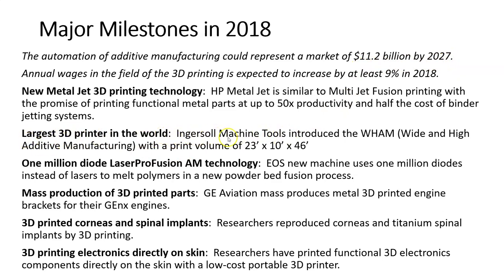The largest 3D printer in the world was developed by Ingersoll Machine Tools — a 1 million diode laser pro-fusion AM technology using 1 million diodes instead of a laser. Metal 3D printing is really starting to catch on. All earlier milestones were plastic technologies; metal came on with the advent of powder bed fusion — using the same technology as selective laser sintering but replacing plastic powder with metal powder and increasing laser power to melt the metal.